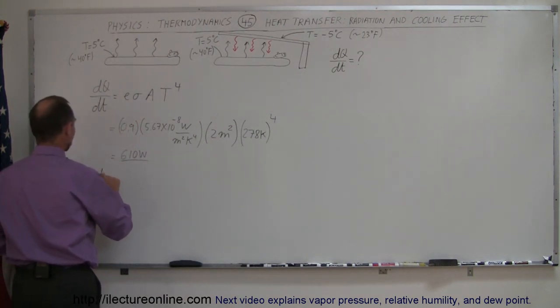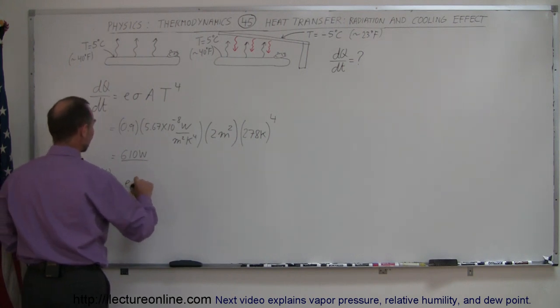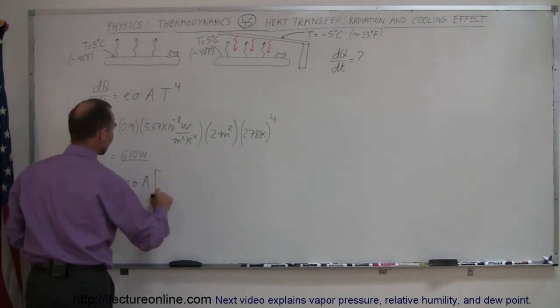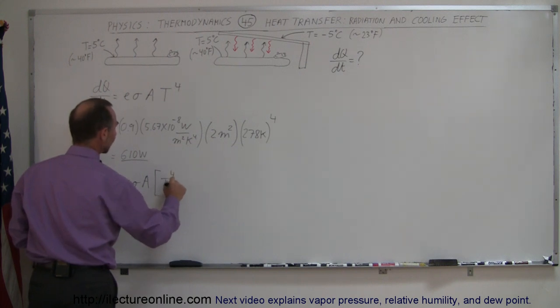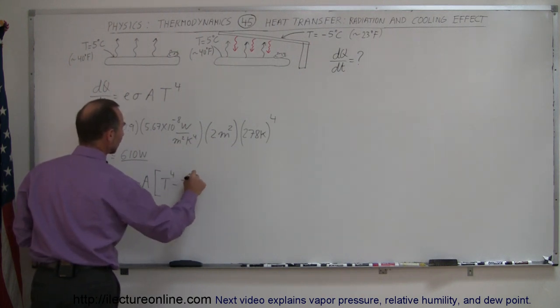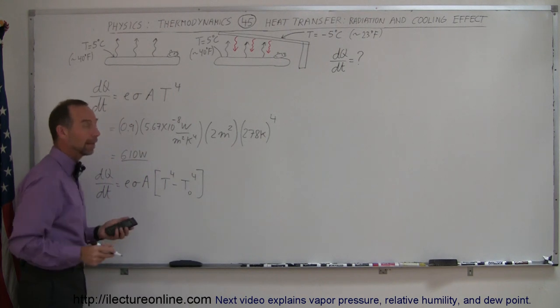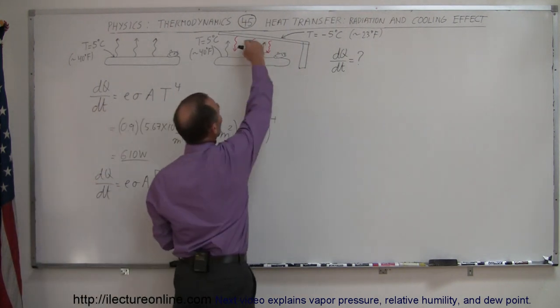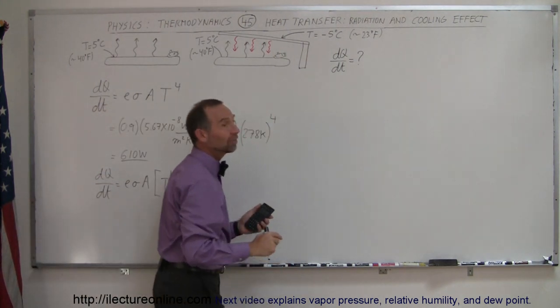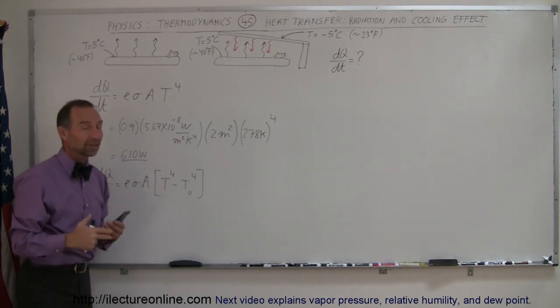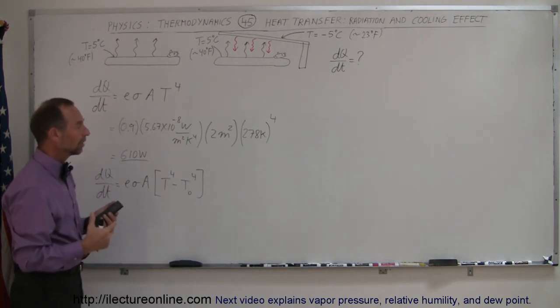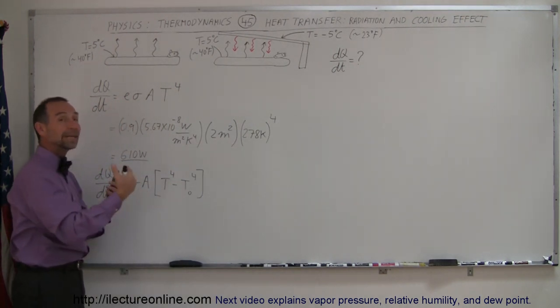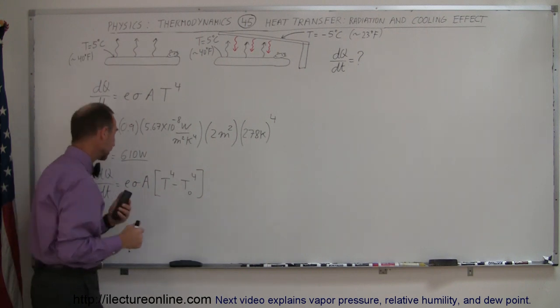then what it becomes is now we have the Q/dt is equal to E sigma A times the temperature of the bag to the fourth power, minus the temperature of the surroundings to the fourth power. And if the roof of the shelter is minus 5 degrees centigrade, let's say it's open to the atmosphere and it's the same temperature as the atmosphere, still you'll get quite a bit of radiation back from that. So let's calculate what that would be.